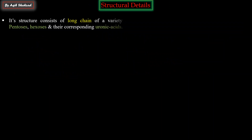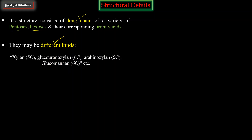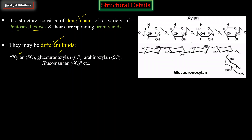Regarding structural details of hemicellulose, its structure consists of long chains of a variety of pentoses and hexoses. Different kinds of pentoses can form the long chain - such as glucuronoxylan, arabinoxylan - as you can see on the side. These pentoses and hexoses form long chains connected by means of beta and alpha types of linkages. Because they are branched, as you can see, there are also branch points present.